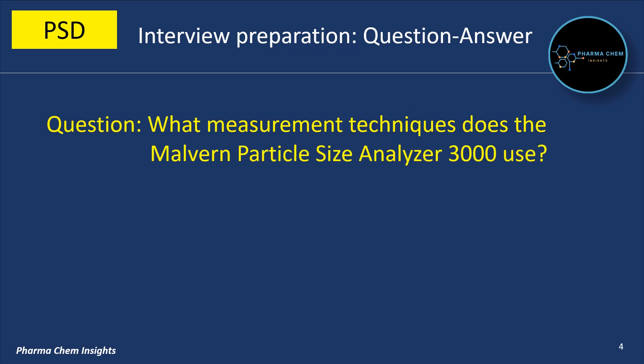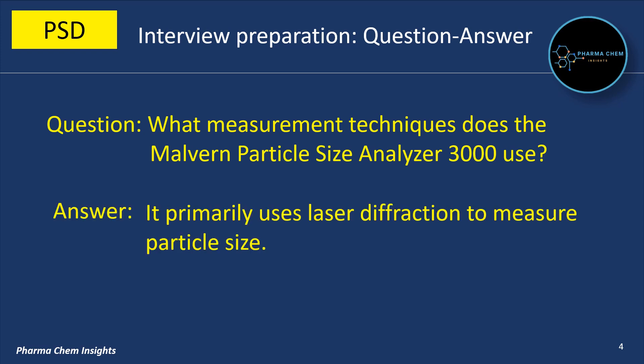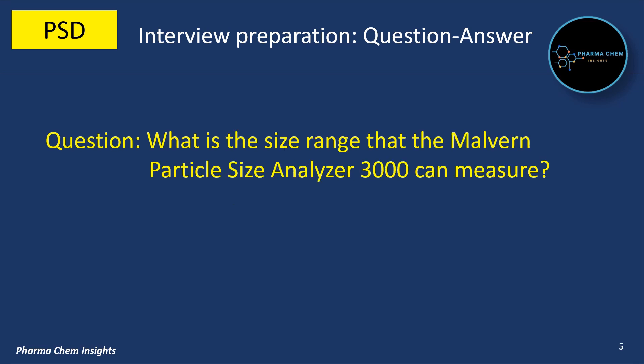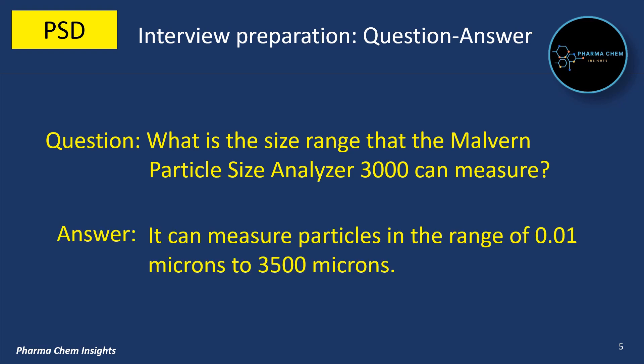Next question: what measurement techniques does the Malvern Particle Size Analyzer 3000 use? It primarily uses laser diffraction to measure particle size. It can measure particles in the range of 0.01 microns to 3500 microns.